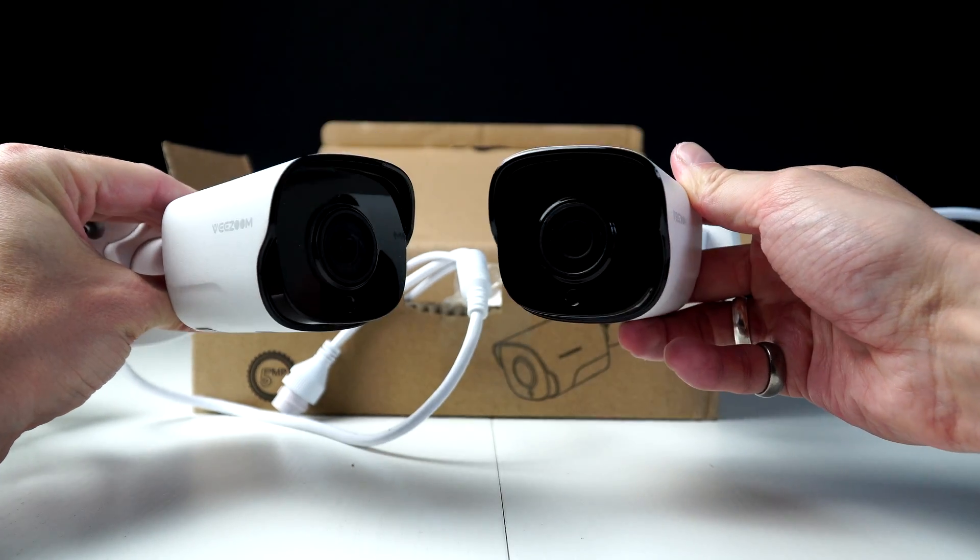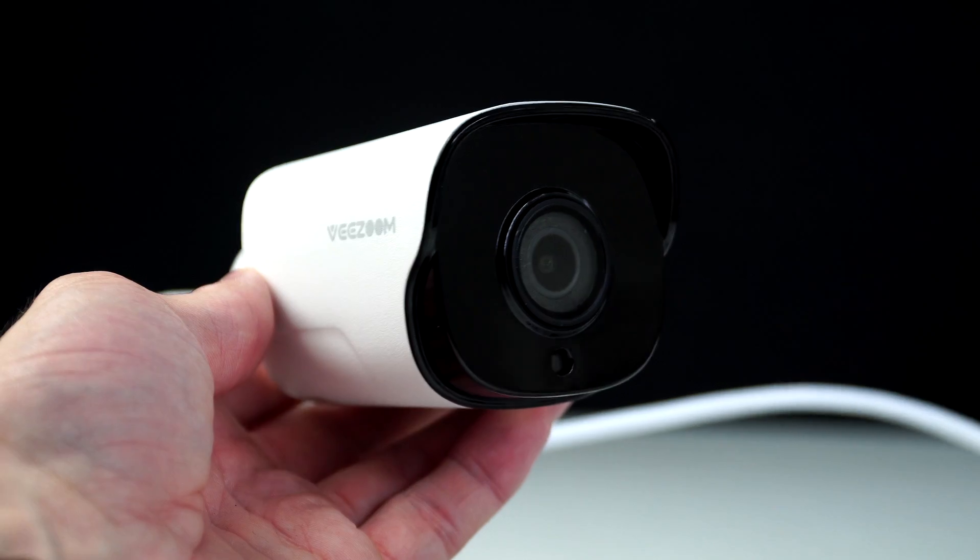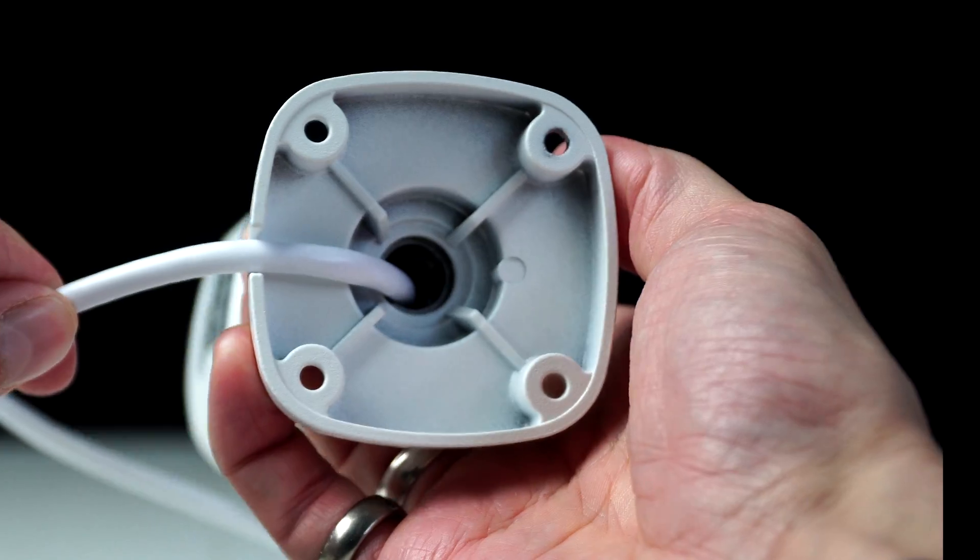So in this two-camera set, we have the two cameras, two 18-meter Ethernet cables, two wall plugs and screws with the join covers, and instructions.